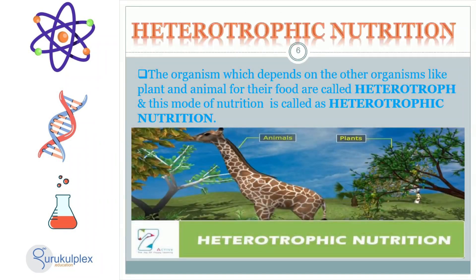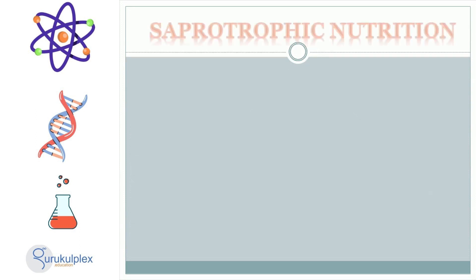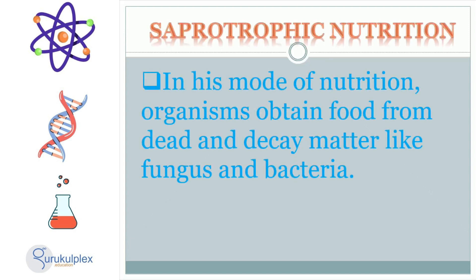Heterotrophic nutrition is the term given to organisms that depend on other organisms like plants and animals for their nourishment. Organisms which use the saprotrophic mode of nutrition obtain their nourishment from dead and decaying matter such as fungus and bacteria. This process breaks down complex molecules which, if left unchanged, would remain in the environment for extended periods of time. Through this, these organisms contribute to the global cycle of nutrients, allowing them to be recycled and reused, bringing benefit to the environment.